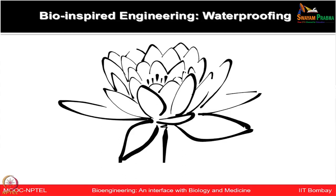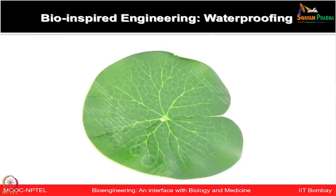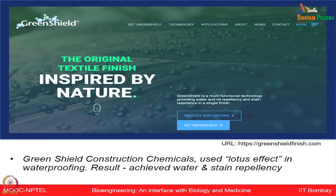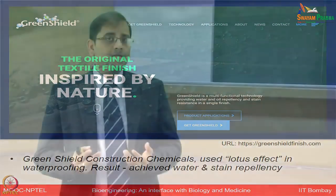Look at this lotus flower and its leaf — they provide us an example for waterproofing. The leaf has crevices of microscopic rough surface which traps air, upon which water droplets float. This observation was utilized by a company called Green Shield, inspired by nature, which made chemicals using the lotus effect that can be used for waterproofing in paints.